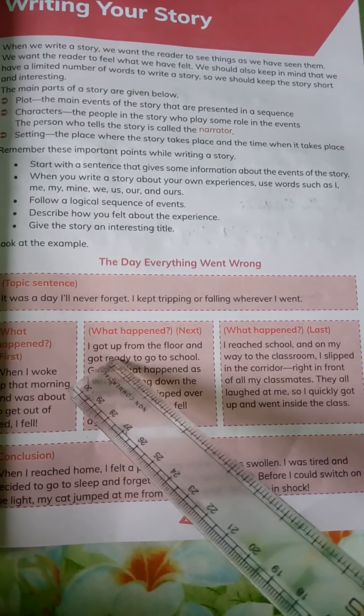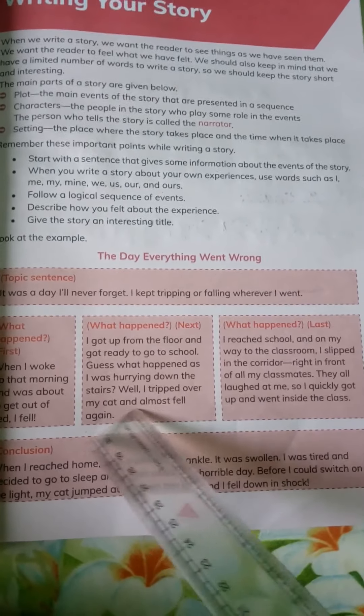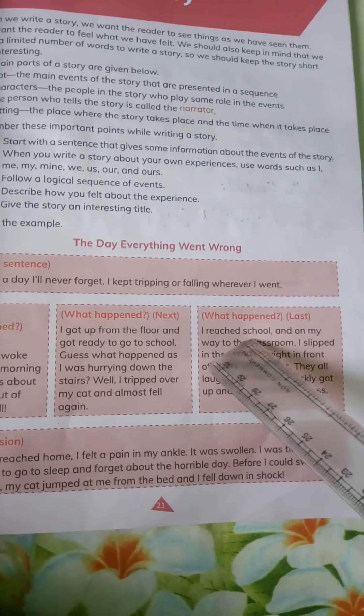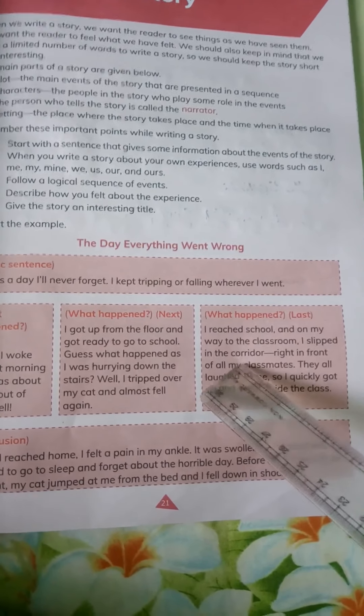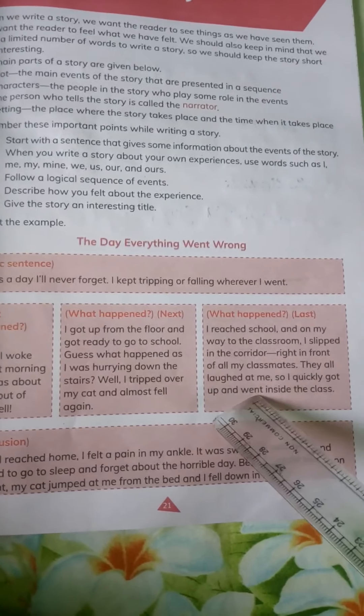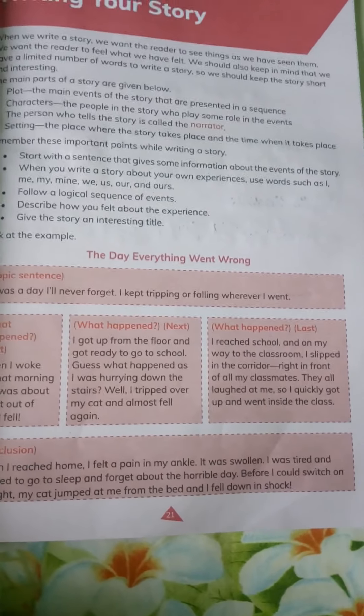What happened next? I got up from the floor and got ready to go to school. Guess what happened as I was hurrying down the stairs — I tripped over my cat and almost fell again. What happened last? I reached school and on my way to the classroom, I slipped in the corridor right in front of all my classmates. They all laughed at me, so I quickly got up and went inside the class.